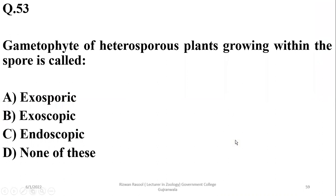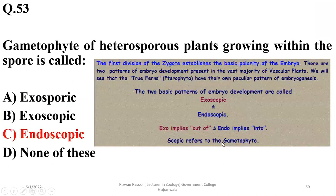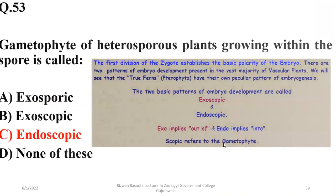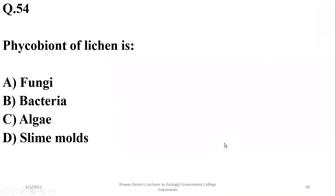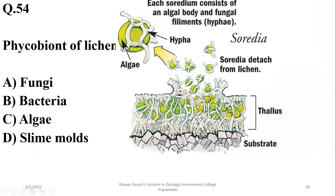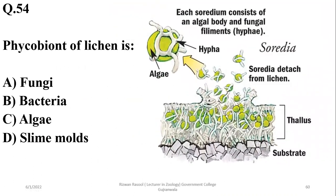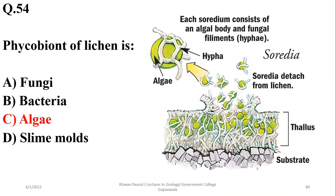The gametophyte of heterosporous plants growing within the spore is called endosporic. Phycobiont, or photosynthetic partner of the lichen association, is algae in most cases, and sometimes cyanobacteria as well. So the right option is Charlie.